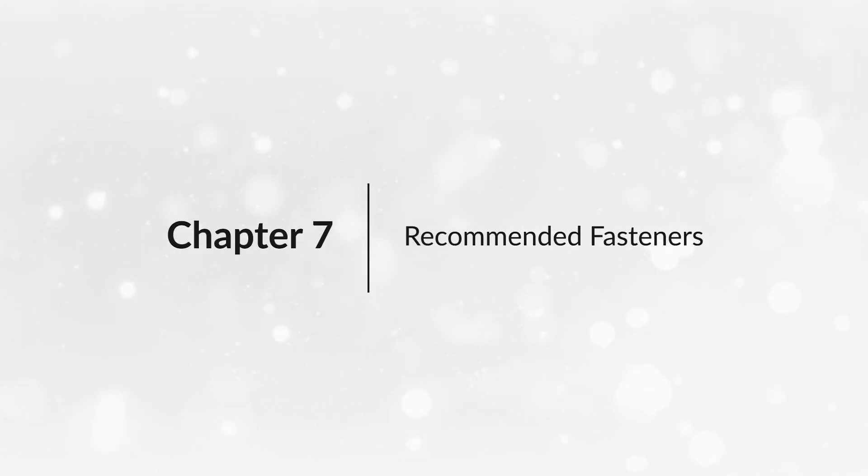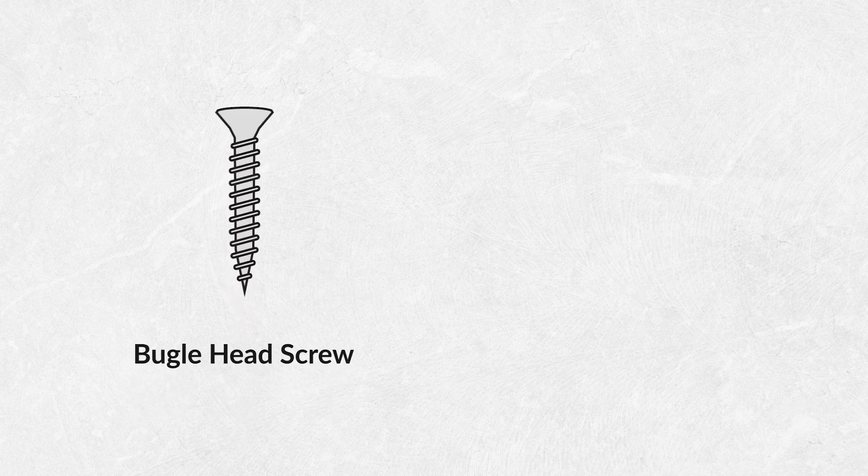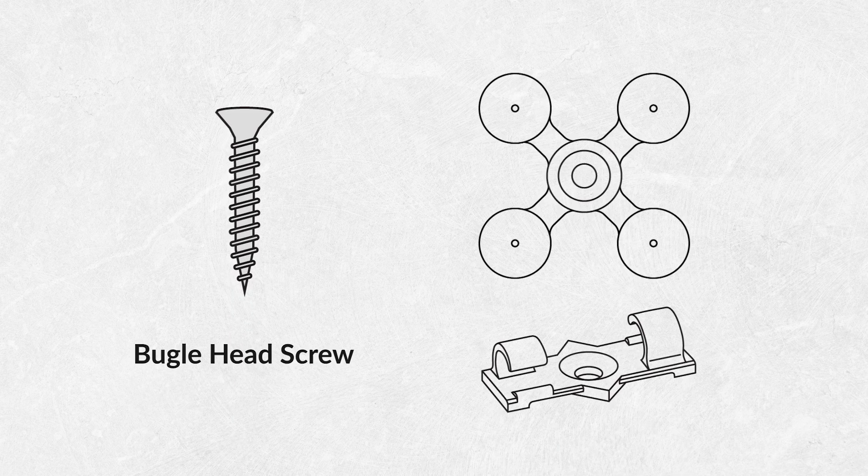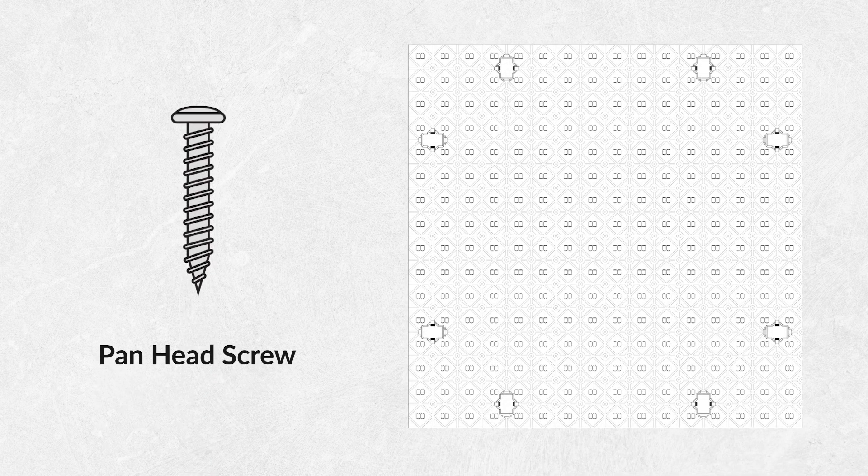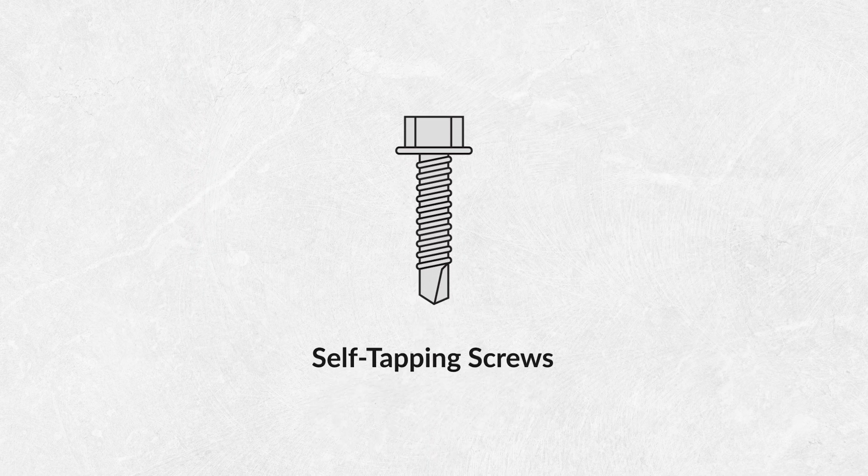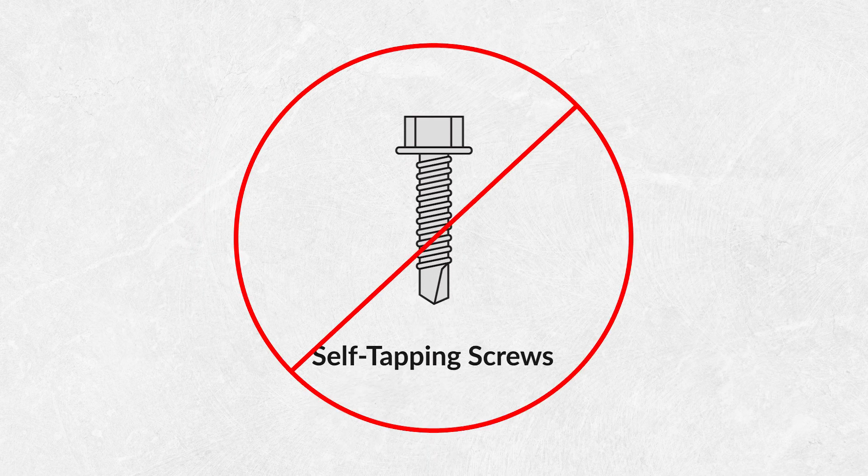It's important to use the right style of fastener. Bugle head screws may be used with quad bumpers and wire management clips. Screws that are flat on the bottom of the screw head, such as panhead screws, may be used for direct lightsheet mounting. Do not use self-tapping screws as these will damage the lightsheet PCB.